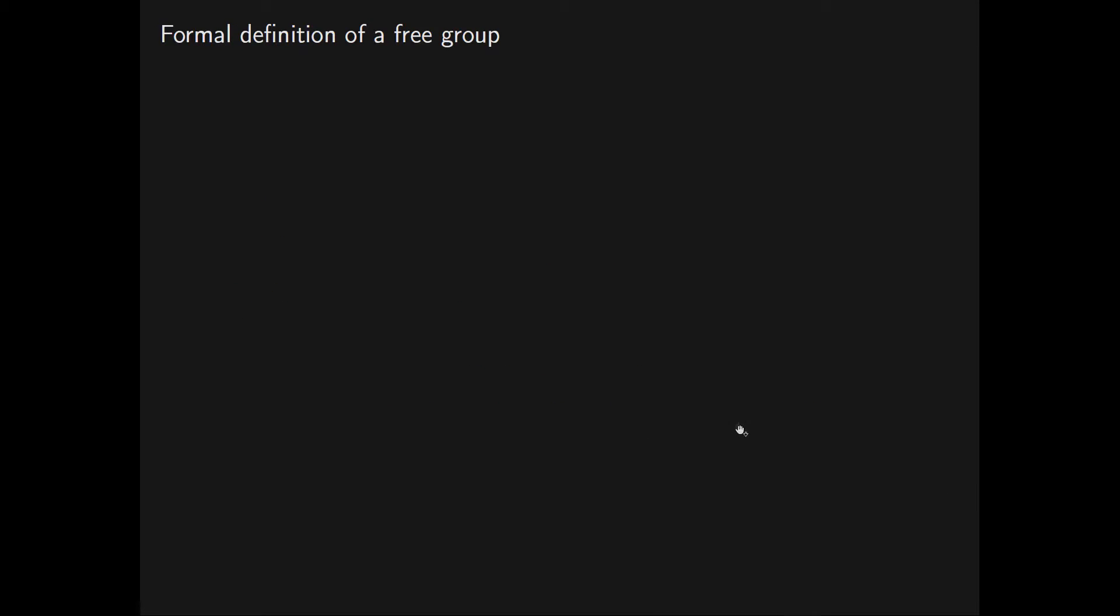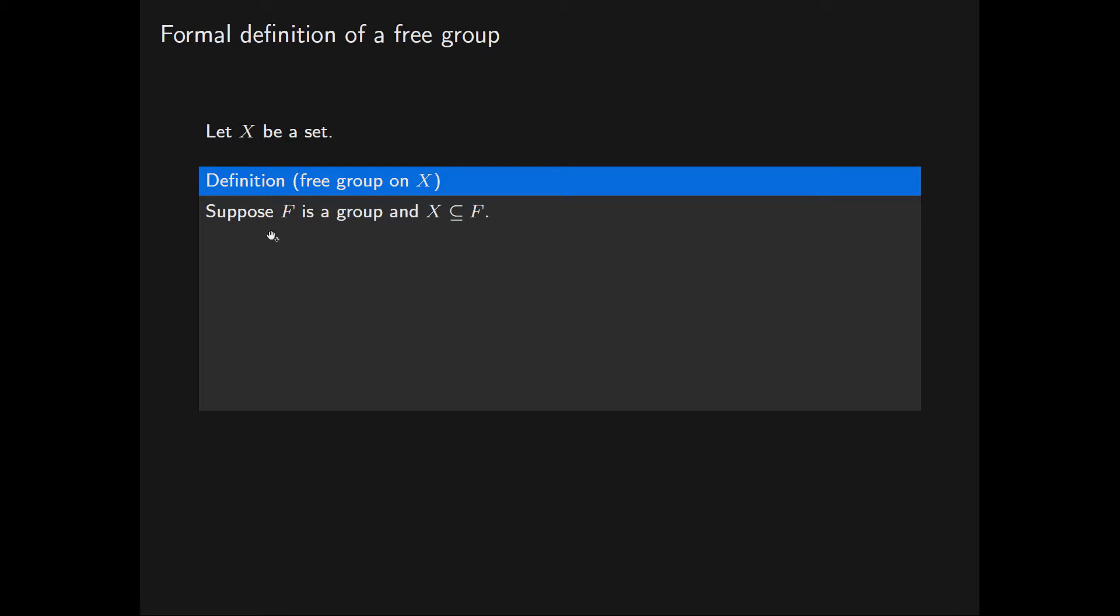So let's formally define a free group on a set X. Let X be a set and suppose that F is a group and X occurs as a subset of F. We then say that the group F is free on X if given any group G and any map phi from the set X into G, we have that phi extends uniquely to give a group homomorphism from F into G that we denote by phi prime.